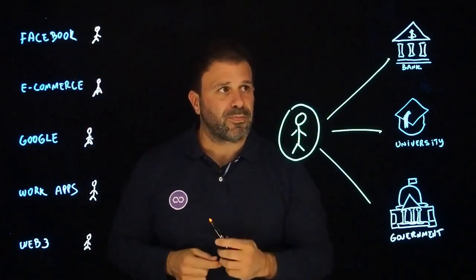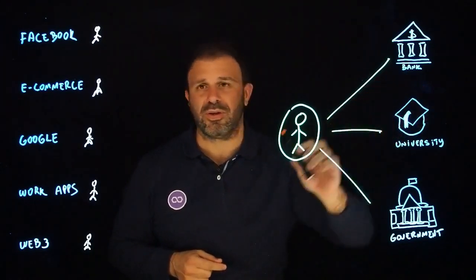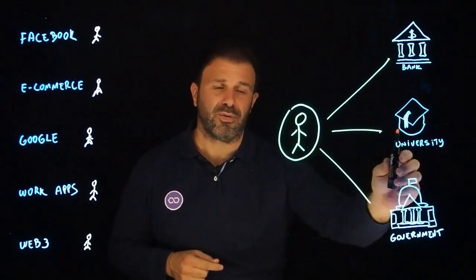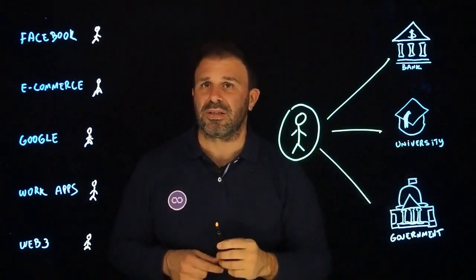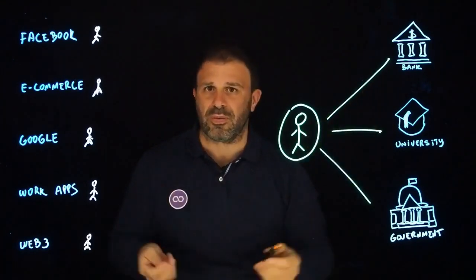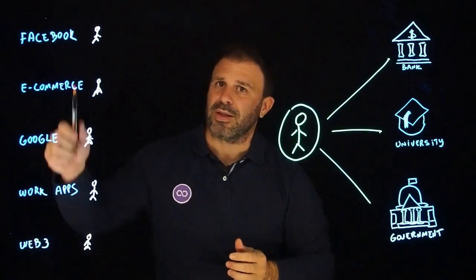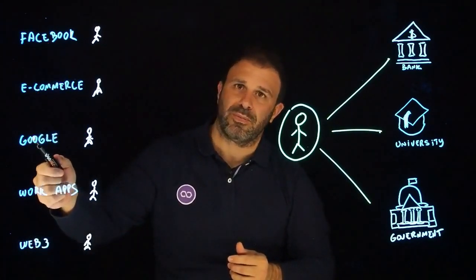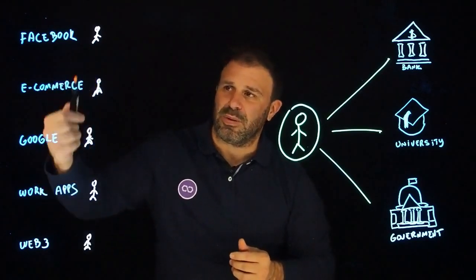Think in your real world: your bank may issue a statement about your credit that you can use in your work. Your government issues you an ID that you can present to the university, and the university issues credentials about your skills that you can present to your work, for your personal reputation, etc. But that doesn't happen on this side. Your identity is fragmented. These services are not talking to each other, so in essence, you are different people for them.